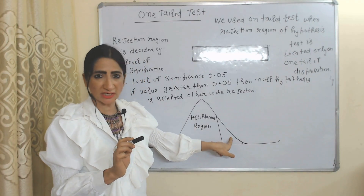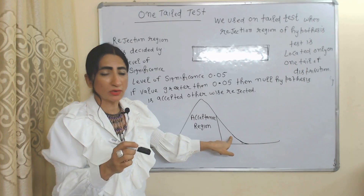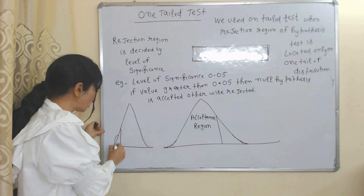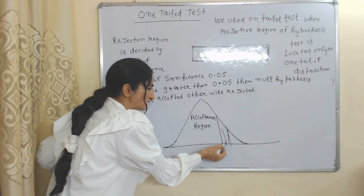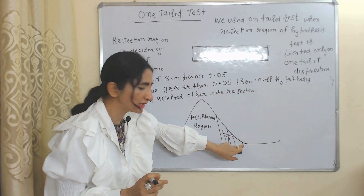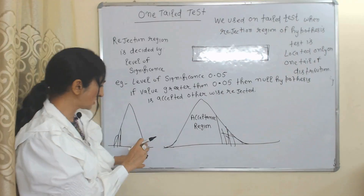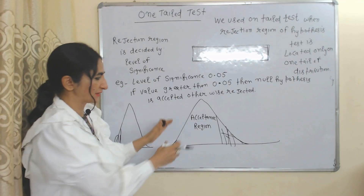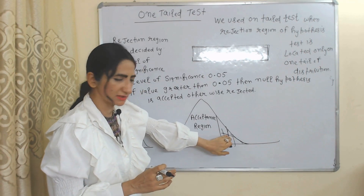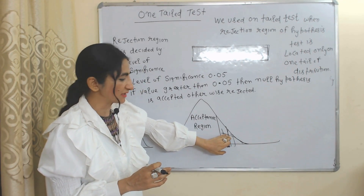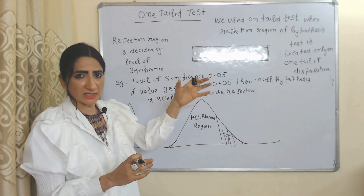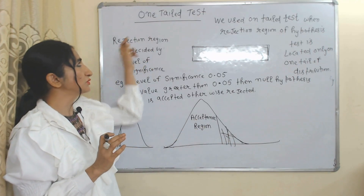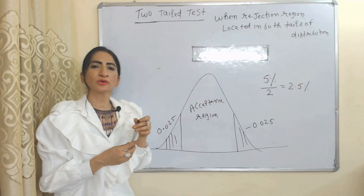Either on the left side or on the right side — we are using only one tail of the distribution, not the other. In such a case we use a one-tailed test. This is the acceptance region and this one is the rejection region. Here the rejection region is located only on one tail of distribution, so we use a one-tailed test.